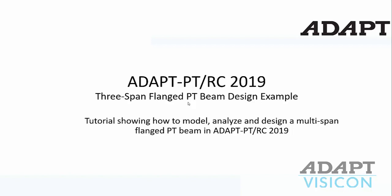This video tutorial will show how to model, analyze, and design a 3-span flanged post-tension beam in ADAPT-PTRC 2019. This is an accompanying video to a one-way slab example located on the same playlist page. We recommend you watch that video prior to this beam video, as that video will define many of the inputs in the program that are shared between one-way slabs, two-way slabs, and beams for design in the software.